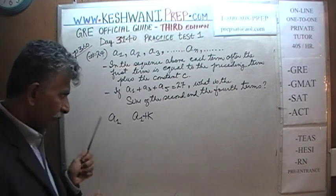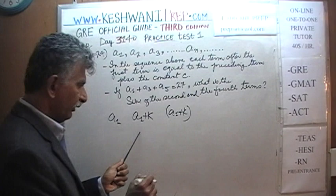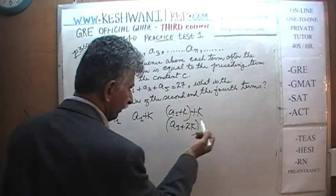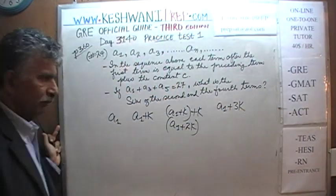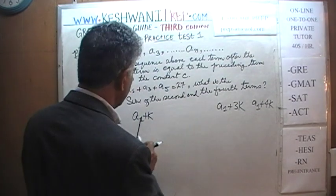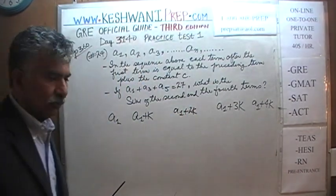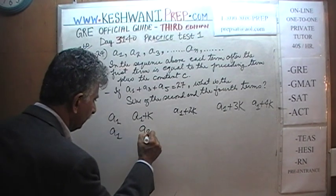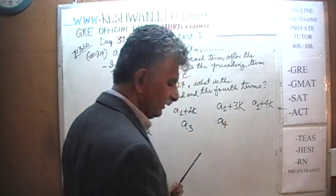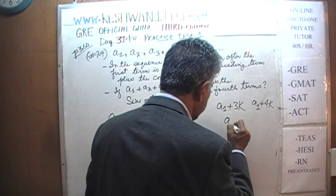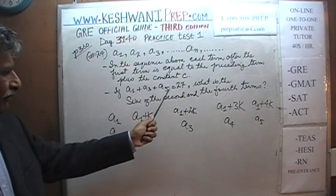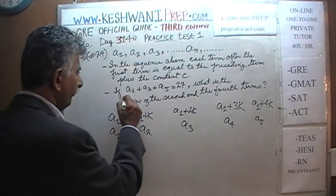Whatever the preceding term plus K: the second term is a1+K, the third term is a1+2K, the fourth term is a1+3K, the fifth term is a1+4K, and so on. We are further told that the sum of the first, third, and fifth terms — a1, a3, a5 — equals 27. The question is: what is the sum of the second and the fourth term?